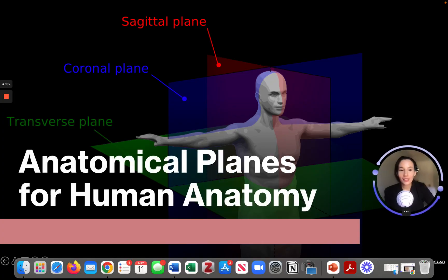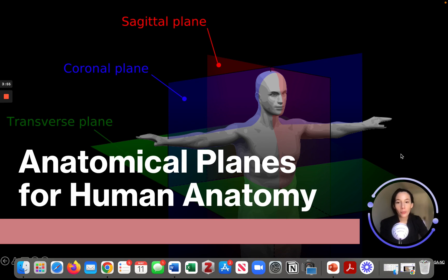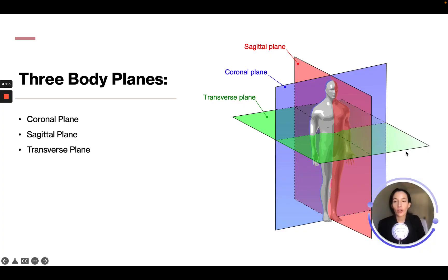Alright, so let's talk about anatomical planes for human anatomy because you will need to know this. There are three body planes. We have the sagittal plane, which is this red. Coronal plane is the blue, and the transverse plane is the green. The point of these boxes is it is showing the way that the planes cut the body. We can see the transverse plane is cutting the body horizontally in half, and then the sagittal plane is going straight down the center, and then coronal is going to be separating the front and back.